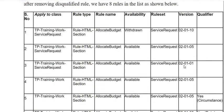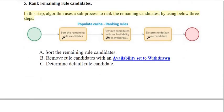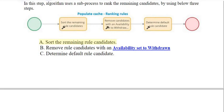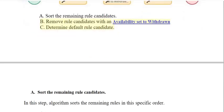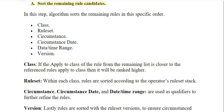Step 5: Rank remaining rule candidates. In this step, the algorithm uses a sub-process to rank the remaining candidates using 3 steps: a) sort the remaining rule candidates, b) remove rule candidates with availability set to withdrawn, c) determine default rule candidate. In step A — Sort the remaining rule candidates — the algorithm sorts the remaining rules in this specific order: class, rule set, circumstance, circumstance date, date-time range, and version.